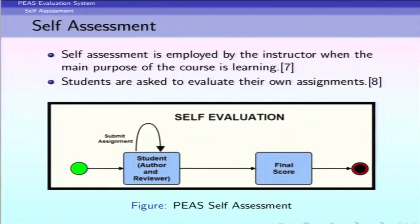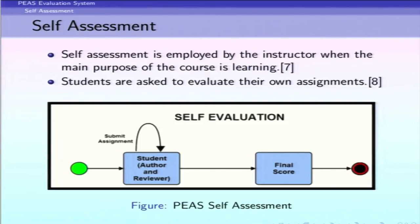Good afternoon everyone. The second module is the self-assessment module. In the traditional grading system, the main focus of the instructor is providing grades with not much emphasis on student learning. Through this self-assessment module, the instructor can enhance learning and creativity among students. Students are allowed to grade their own assignments based on an evaluation form or rubrics, which encourages them to reflect on their weaknesses and enhance their learning. These self-assigned marks are considered as their final score.